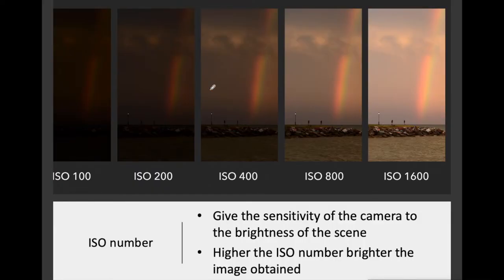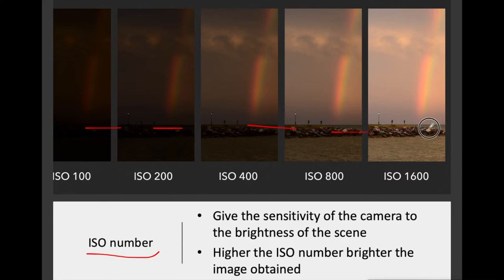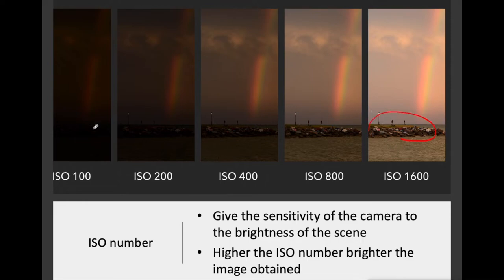ISO number is also a very important aspect of a camera. It gives the sensitivity of the camera to the brightness of the scene. The higher the ISO, the more brightness it can capture from the scene. With the same camera at different ISO settings, more ISO means a brighter image, less ISO means a less bright image. Higher ISO number means a brighter image is obtained.